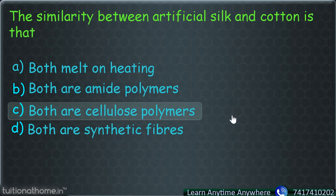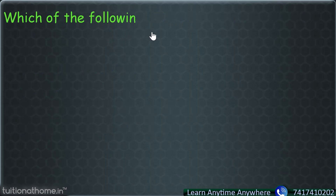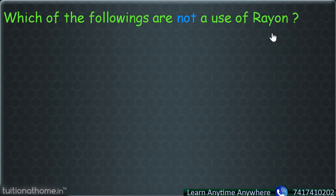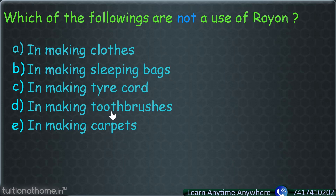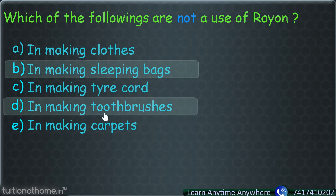Last question: which of the following is NOT a use of rayon? Options are: making clothes, making sleeping bags, tire cord, toothbrushes, or carpets. Sleeping bags — we haven't learned that. Toothbrushes — you don't make toothbrushes with cloth material. So the correct answers are sleeping bags and toothbrushes. Rayon is used in the making of carpets, tire cords, and clothes.